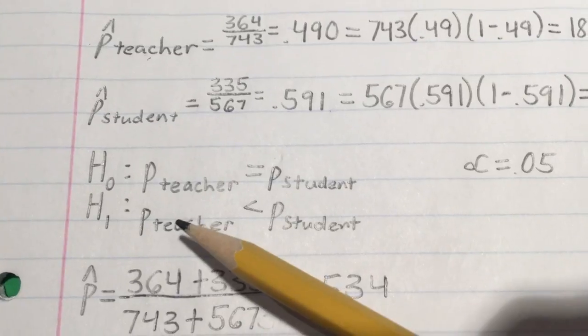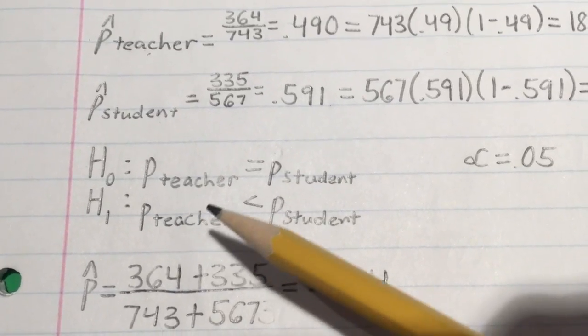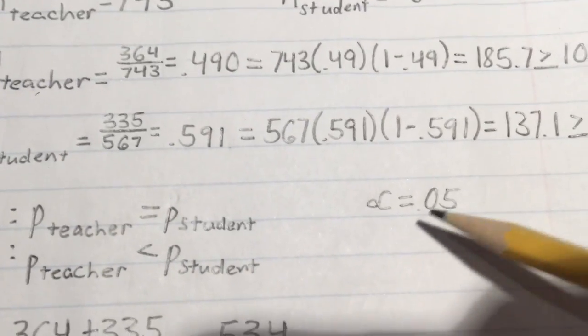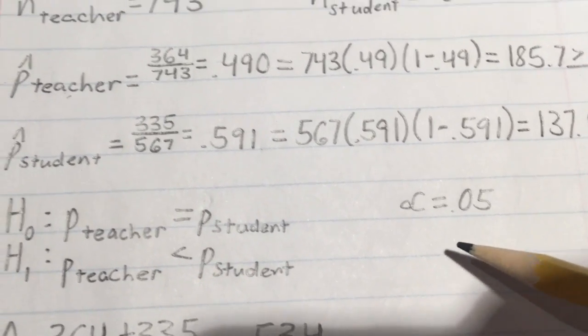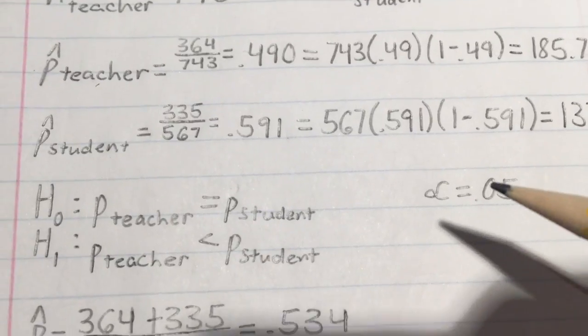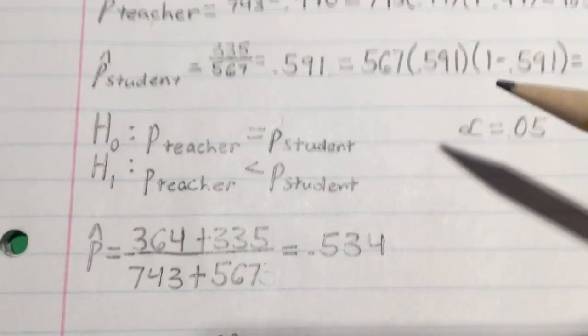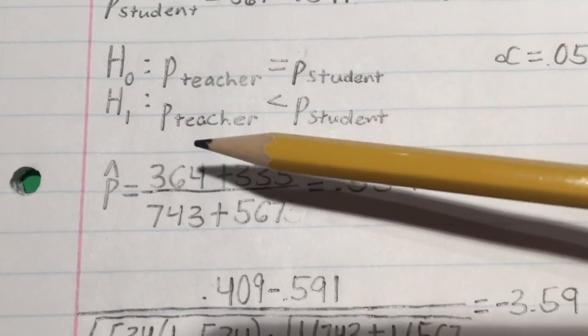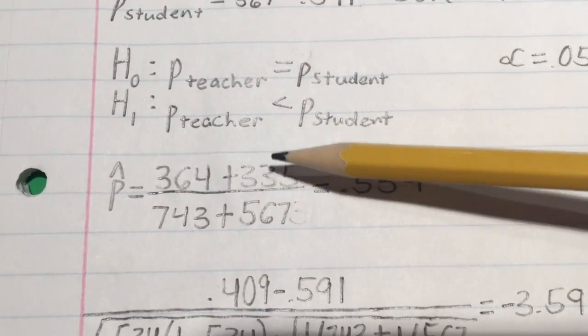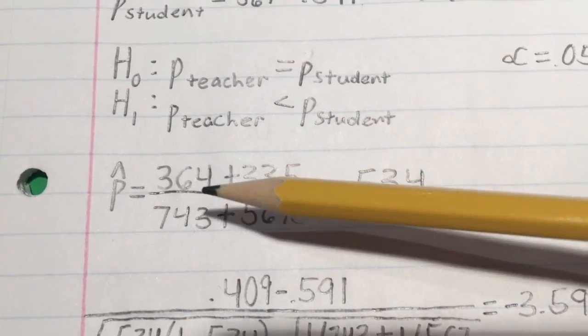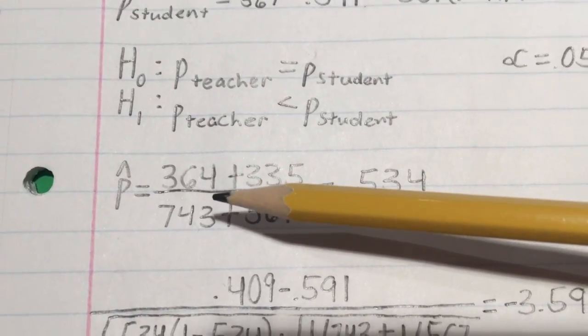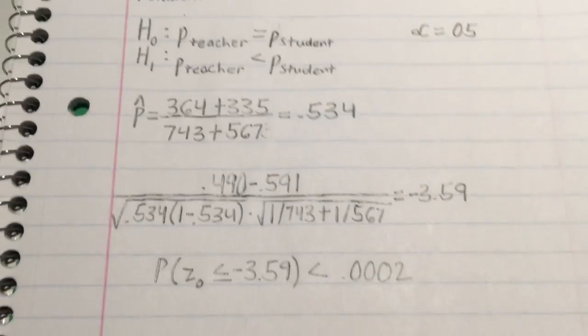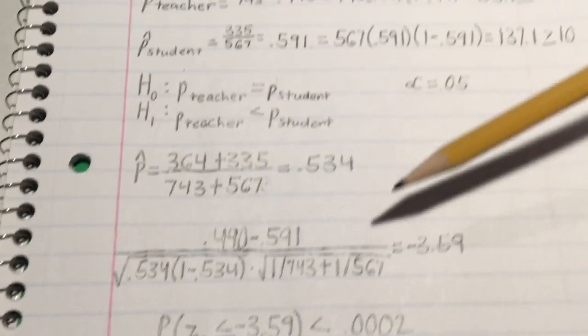The alternative hypothesis is that the proportion of the teacher-centered model is less than the proportion of the student-centered model. And of course, we will be using the 0.05 level of significance. We would also need to have a pooled estimate of the proportion, so we would simply add together the samples of the two models and divide them by the sum of the two populations to get 0.534.